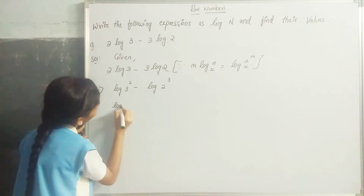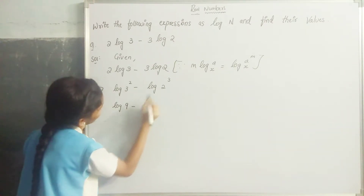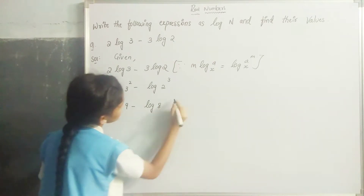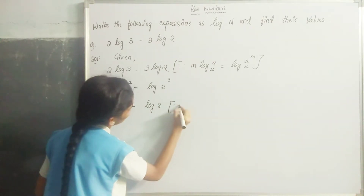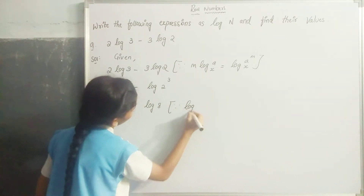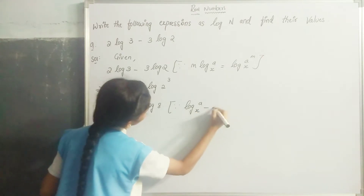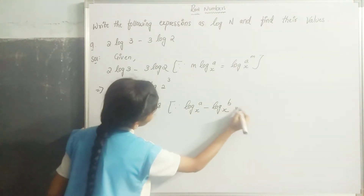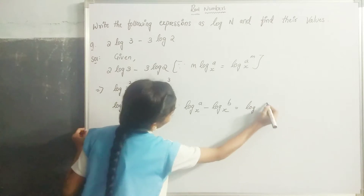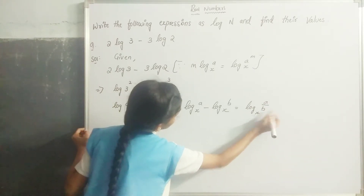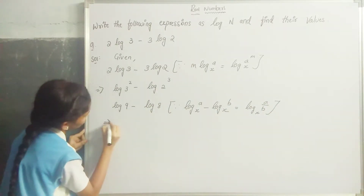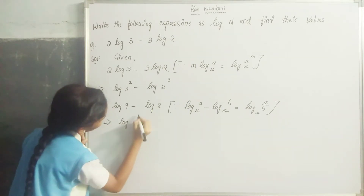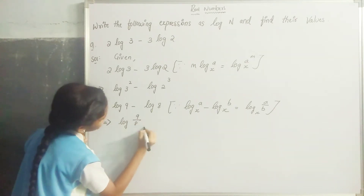Log 3 squared is log 9 and log 2 cubed is log 8. Since it is in the form of log a to the base x minus log b to the base x, that implies it becomes log 9 by 8.